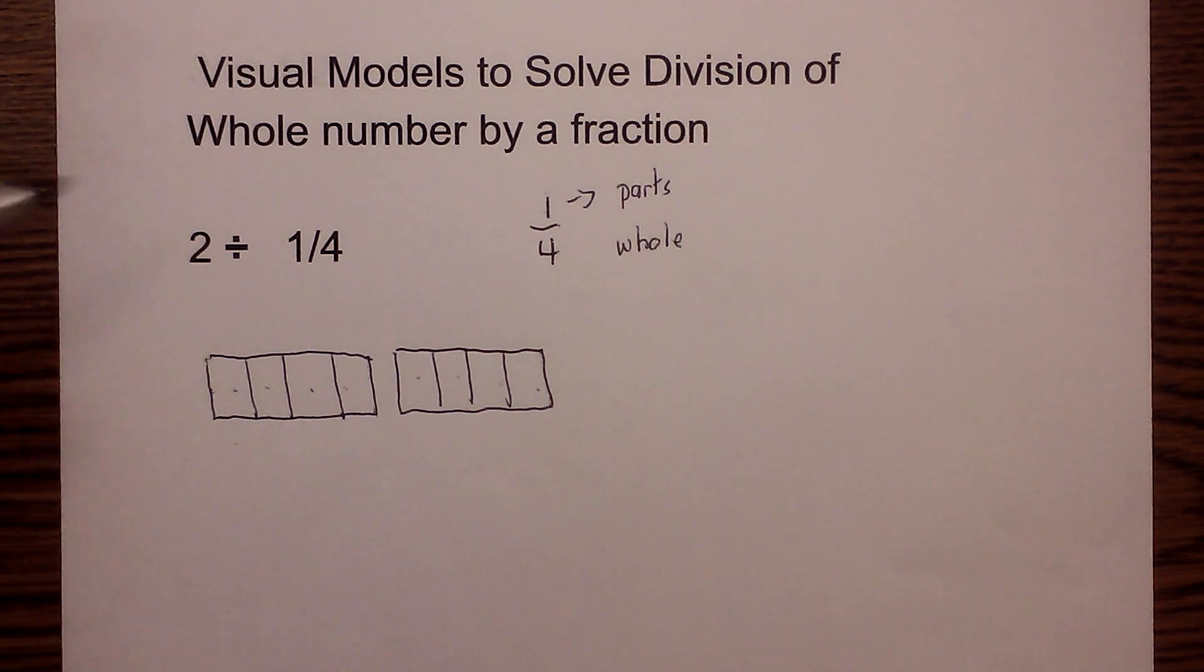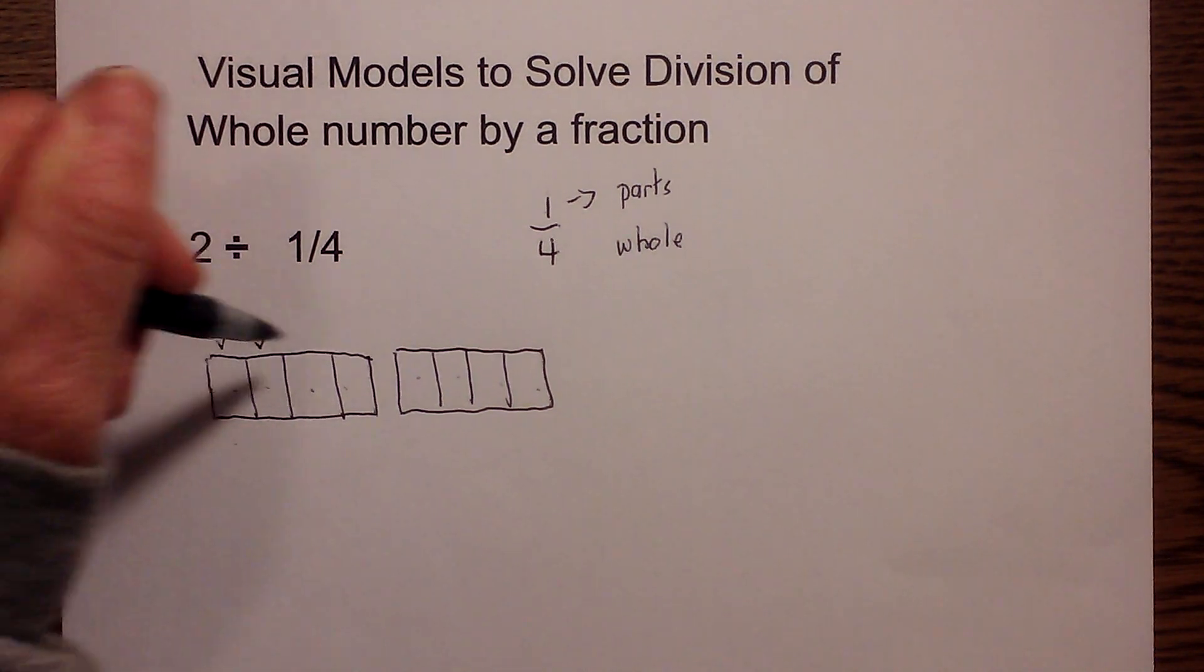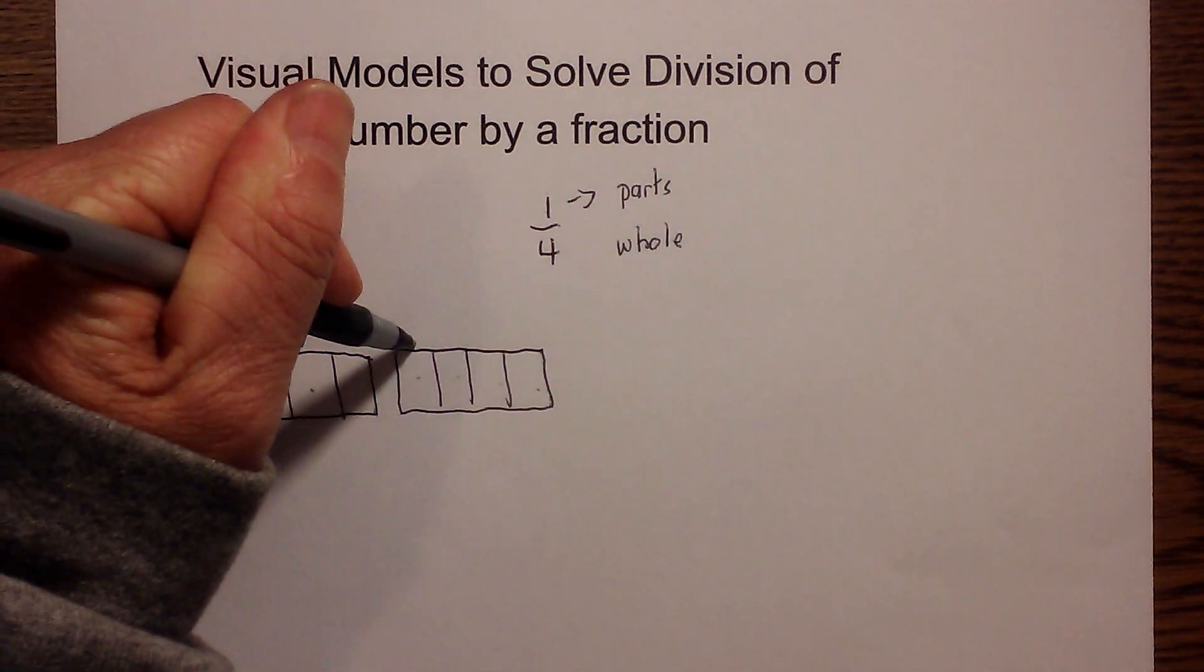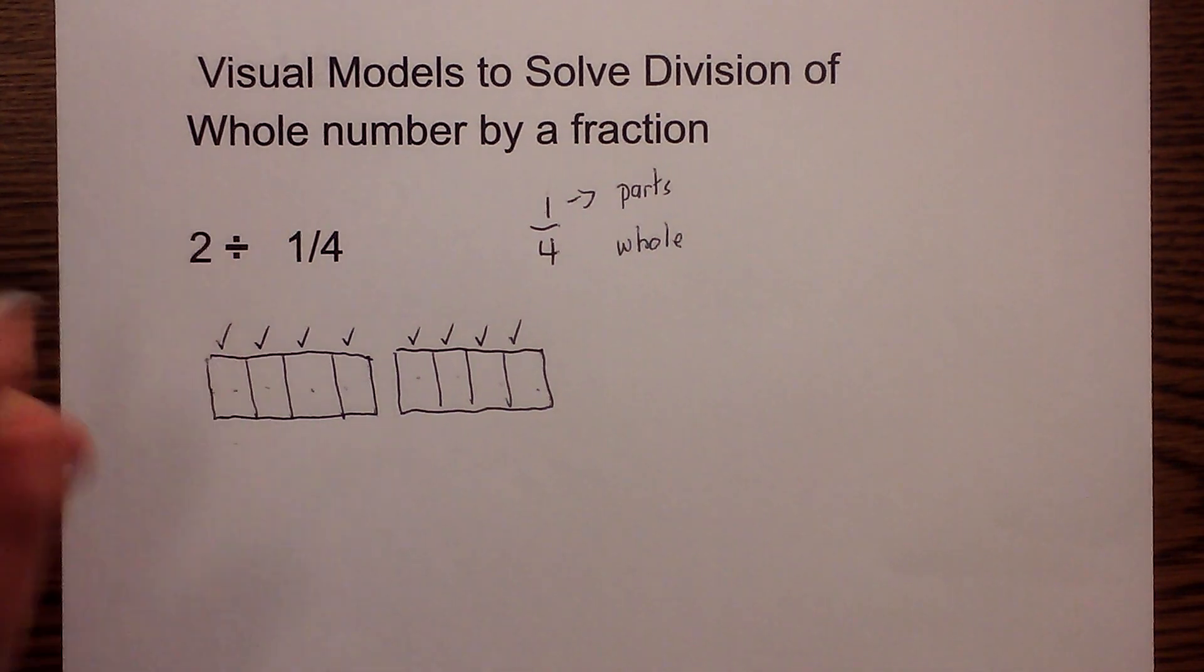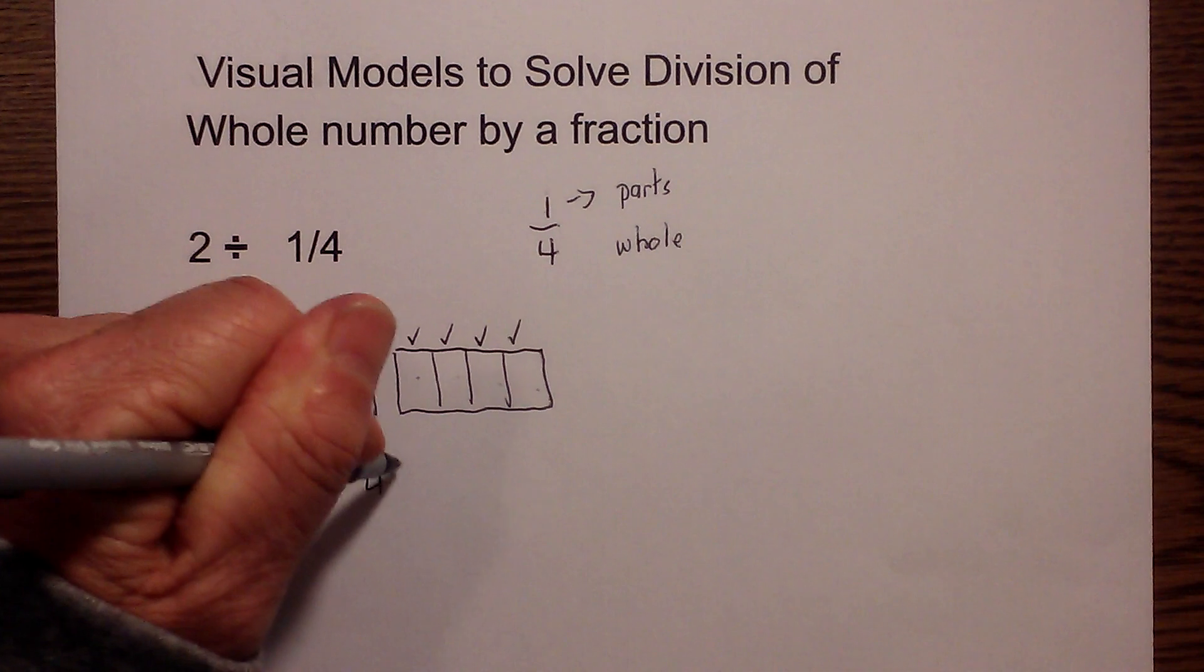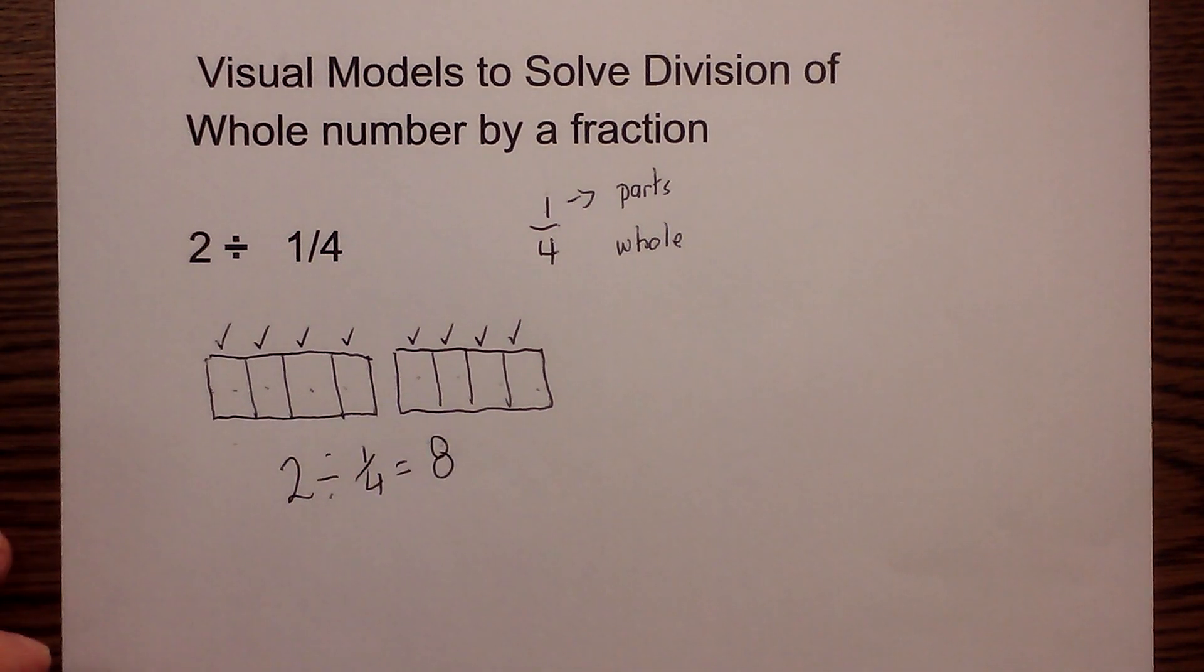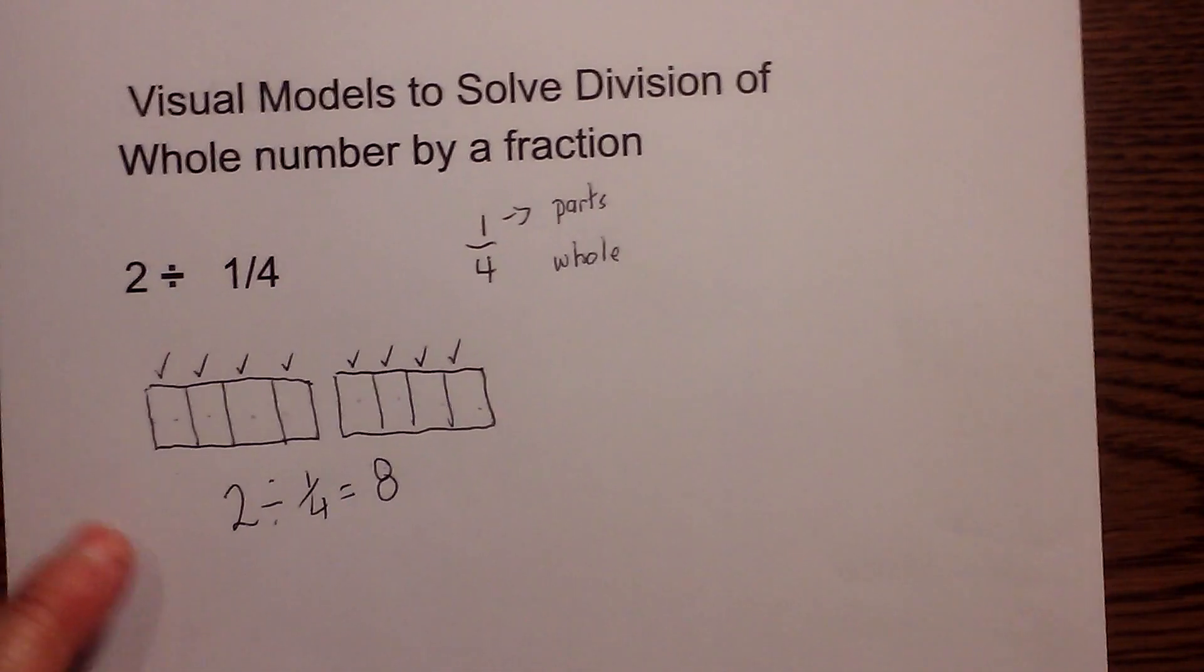I need to count. This is one of the fourths, and then we have two of the fourths, three of the fourths, and you can continue. There's four, five, six, seven, eight. If I have two and divide it by one-fourth, that gives me eight parts. One-fourth will go into two eight times. Let's look at another example of this.